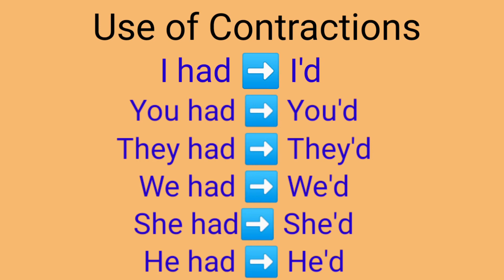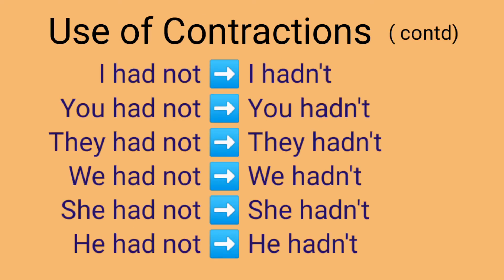Similarly, for negatives: I had not becomes I hadn't. You had not becomes you hadn't. They had not becomes they hadn't. We had not becomes we hadn't. She had not becomes she hadn't. He had not becomes he hadn't.